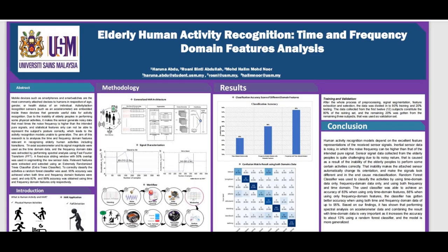But due to the inability of elderly people in performing some physical activities such as jogging, running, walking, it makes the sensor generate noisy data that most of the time has noise frequency higher than the intended field signals. Statistical features which are commonly being used to extract relevant features and recognize what activity an individual is engaged, those statistical features alone cannot represent the subject posture correctly and sometimes may lead to the activity recognition model being unforeseen and generalized.